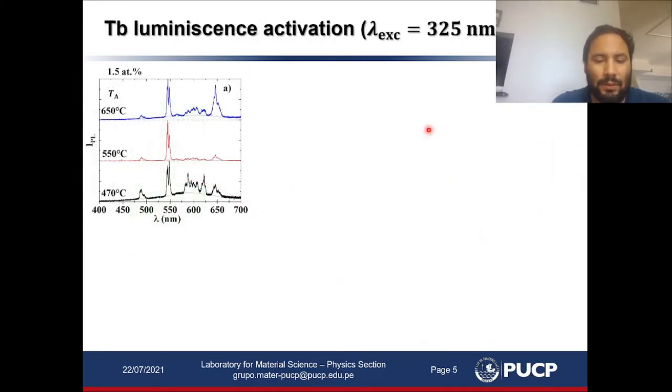We were able to obtain the luminescence from the terbium ions embedded in this host by post-deposition thermal treatments and under this excitation wavelength. Here I'm showing you the luminescence spectra for three different annealing temperatures of a sample with 1.5 atomic percent of terbium. We are able to identify the typical electronic transitions related to the terbium ions, and interestingly we see that the 5D4 to 7F2 transition increases in intensity for this annealing temperature. This is quite an unexpected behavior.